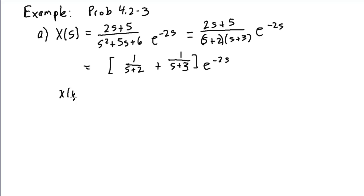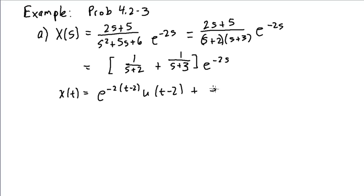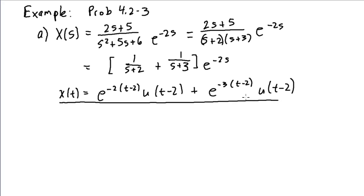The inverse transform of 1 over s plus 2 would be e to the minus 2t times u of t. But multiplying by the exponential gives us a delay, so the inverse transform becomes e to the minus 2 times (t minus 2) times u of t minus 2. Similarly, the second term gives e to the minus 3(t minus 2) times u of t minus 2 for the final inverse Laplace transform.